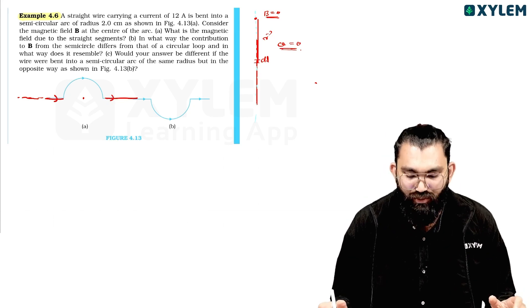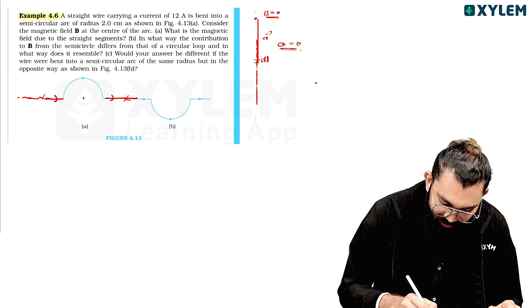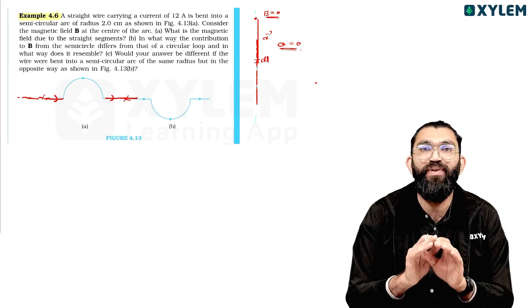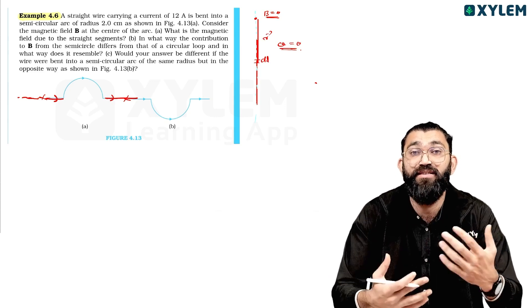In the same way, mu_0 by 4π, i DL sine theta by r squared, theta is zero, then the magnetic field is zero. At the axial point, the magnetic field is zero. We have already learned that. So in this straight segment, the center magnetic field contribution is zero. That concept is in the NCERT exercises.